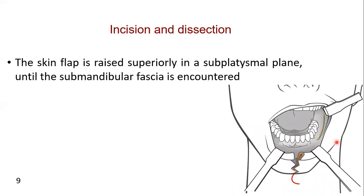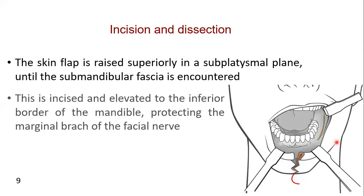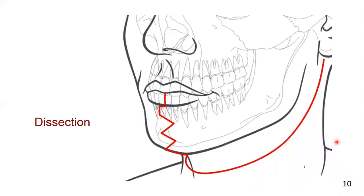The skin flap is raised superiorly in a sub-platysmal plane until the submandibular fascia is encountered. This is incised and elevated to the inferior border of the mandible, protecting the marginal branch of the facial nerve.